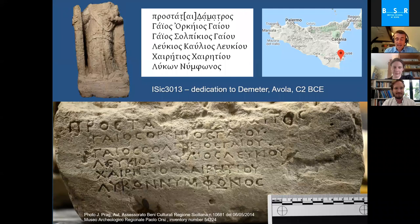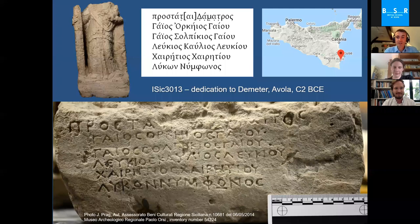Texts of less monumental varieties shed light on the interactions of peoples in different places. A dedication to Demeter inscribed on the base of a statue bears a list of names in Greek ranging through a variety of Roman and Italic names — Gaius, Lucius, Caelius — and also Greek names like Charitios and Nymphon, in a period before the Verrine era in the early years of the Roman Republican province. This suggests a much greater level of interaction, although the dynamics behind that interaction are much less clear than we would get from literary sources or archaeology alone.